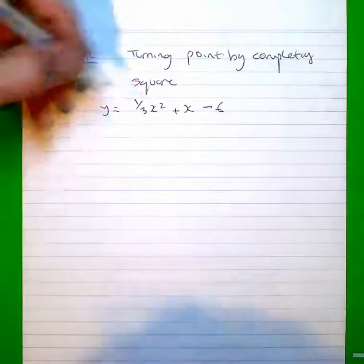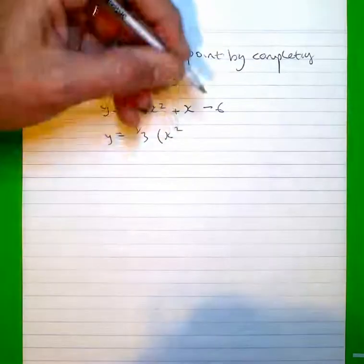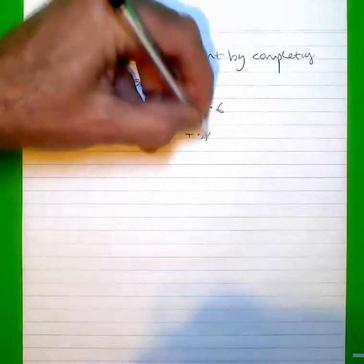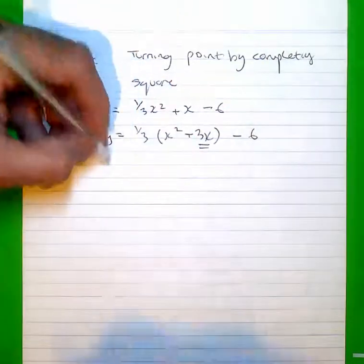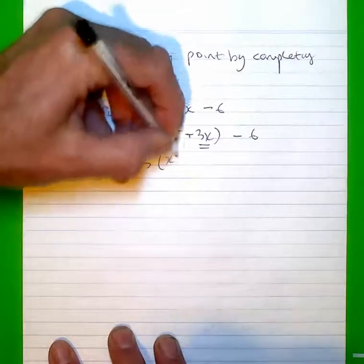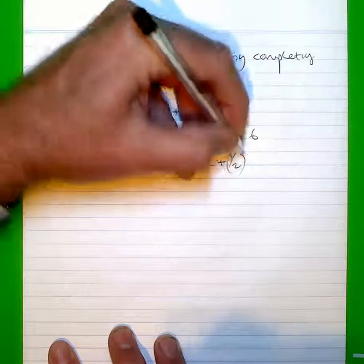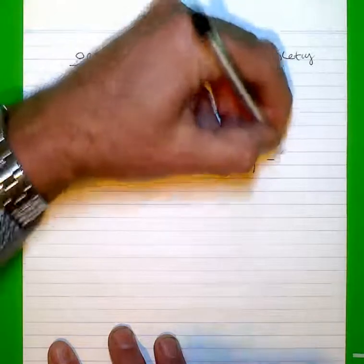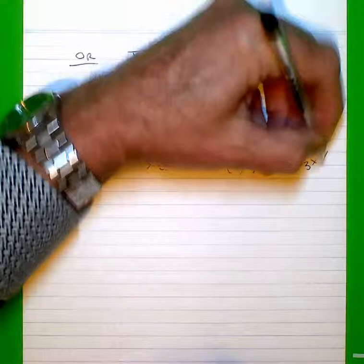So as before I take the third out and I'm left with x squared plus 3x close the bracket minus 6. Halve and square the coefficient of 3 there. So I end up with x squared plus 3x plus 3 over 2 all squared minus 6 minus a third times 3 over 2 squared.